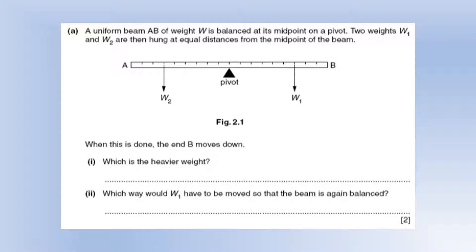A uniform beam AB of weight W is balanced at its midpoint on a pivot. The two weights W1 and W2 are then hung at equal distances from the midpoint. When this is done, end B moves down. Which is the heavier weight? Well, it must be W1 because its moment must be greater than the moment of W2 to make B go down.